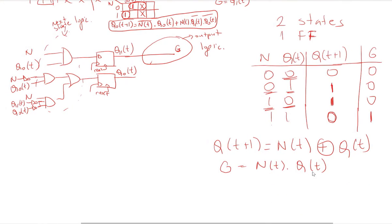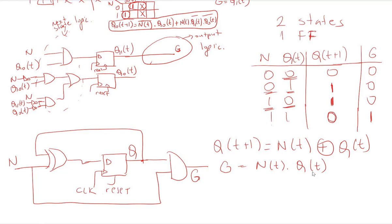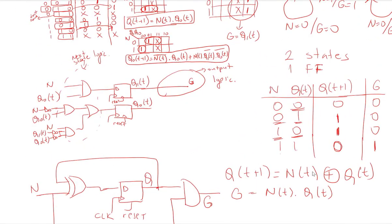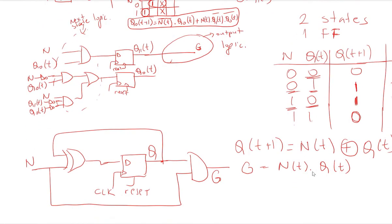Drawing the Mealy schematic: we have one D flip-flop with an XOR gate computing Q XOR n as the D input, and an AND gate computing n AND Q for output g, plus a clock. Comparing the two designs: the Moore machine requires four AND gates, inverters, and two flip-flops, while the Mealy machine needs only one AND gate, one XOR gate, and one flip-flop. The Mealy FSM is much simpler and has fewer components.